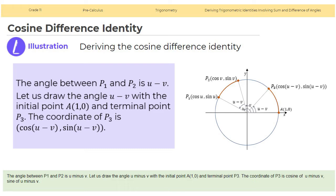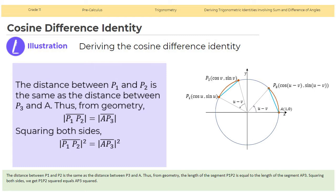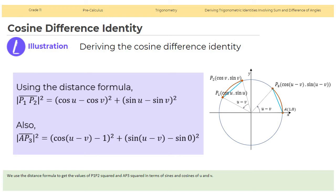Let us draw the angle u minus v with initial point A(1, 0) and terminal point P3. The coordinate of P3 is (cosine(u minus v), sine(u minus v)). The distance between P1 and P2 is the same as the distance between P3 and A. Thus, from geometry, the length of segment P1P2 is equal to the length of segment AP3. Squaring both sides, we get P1P2 squared equals AP3 squared. We use the distance formula to get values of P1P2 squared and AP3 squared in terms of sines and cosines of u and v.